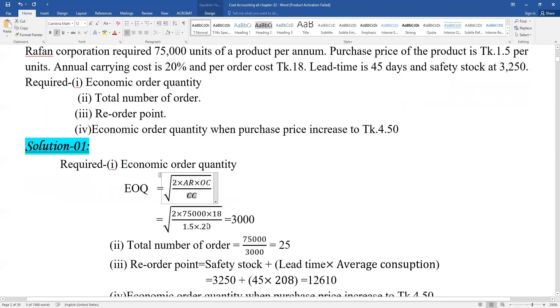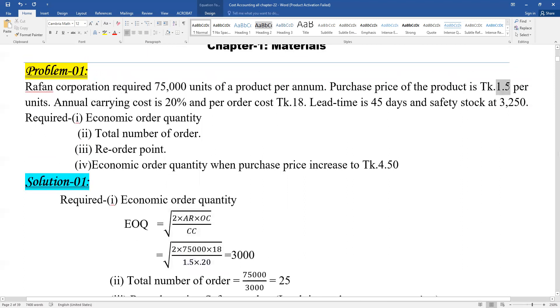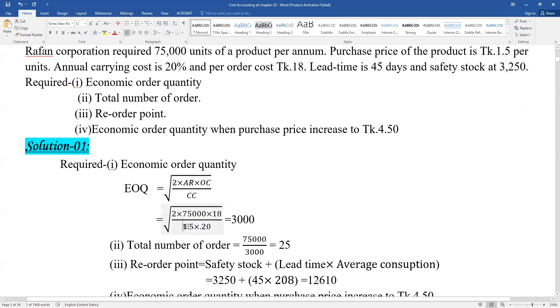Where CC is the carrying cost. The carrying cost is calculated from the purchase price. The purchase price was 1.5, and 20 percent of 1.5 gives us the carrying cost.